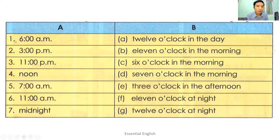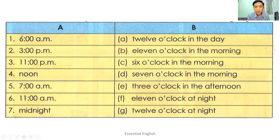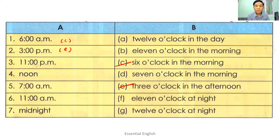Number one: six A.M. refers to six o'clock in the morning, so match it with C. Number two: three P.M. means three o'clock in the afternoon — match with E. Number three: eleven P.M. means eleven o'clock at night — match with F. Number four: noon refers to twelve o'clock in the day — match with A.